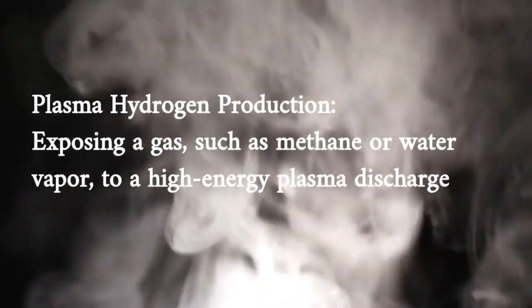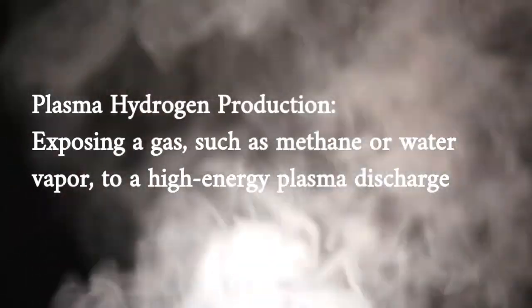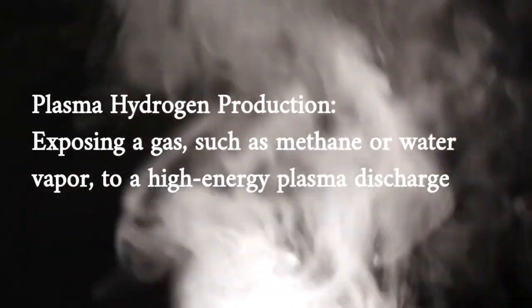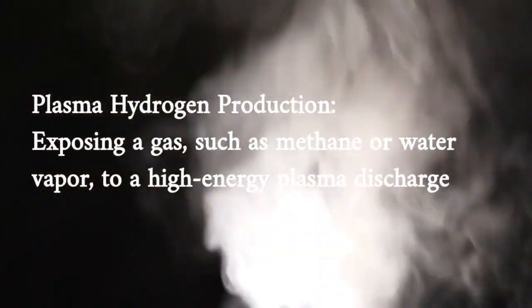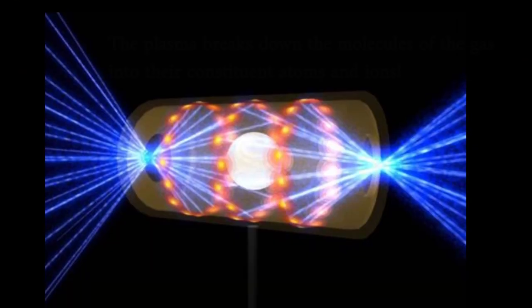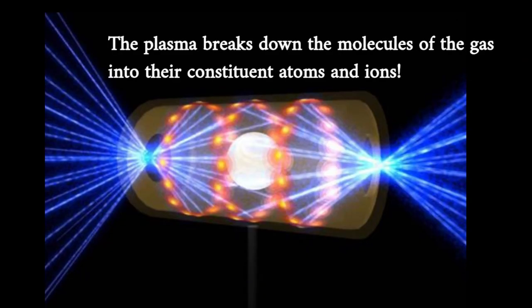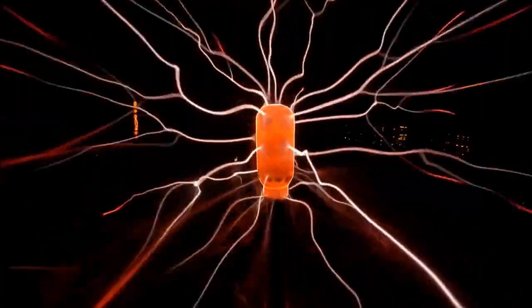The plasma breaks down the molecules of the gas into their constituent atoms and ions, which then recombine to form hydrogen gas. The plasma process can be powered by electricity from renewable sources such as wind or solar power.